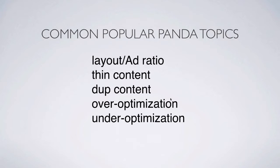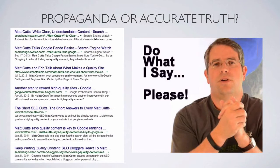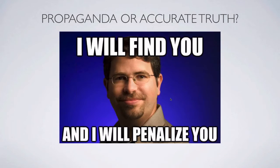We've got propaganda versus the truth. The Panda abstract filed with the U.S. Patent Office says something not very similar to what is usually talked about with Panda. Usually, from Matt Cutts and John Mueller and folks at Google all the way down, people talk about Panda in terms of penalties, layout, ad ratio, thin content, duplicate content, over-optimization, under-optimization — 'be careful or Panda is going to penalize your site.' Then Google tells you to create awesome content and wait for people to link to you. The implication Google has publicly given is that Panda is there to hurt you.